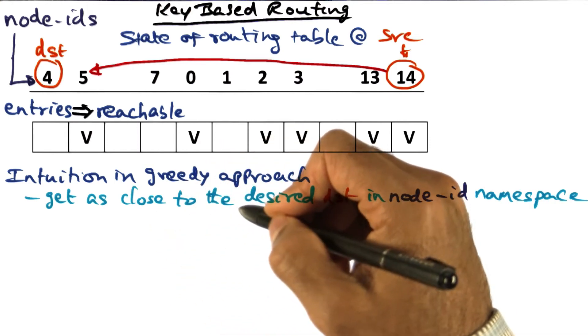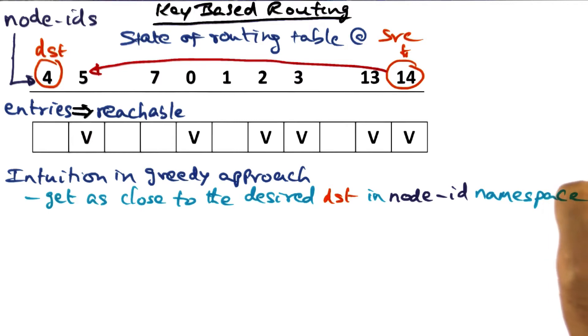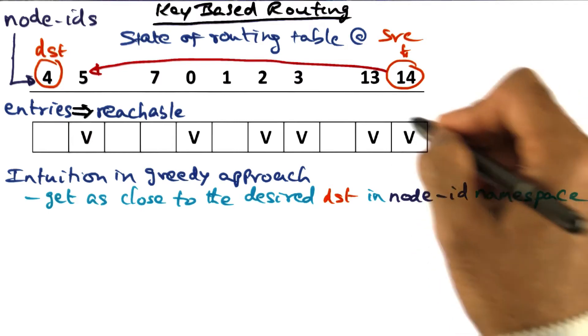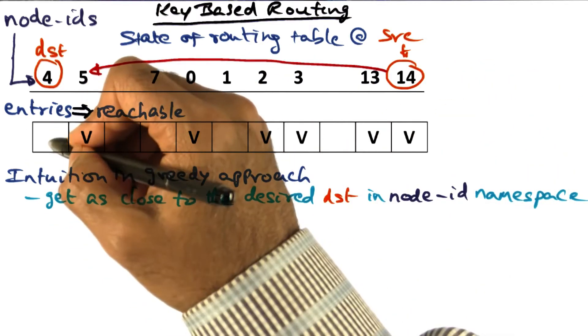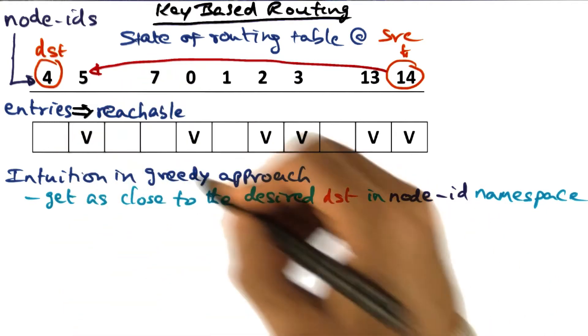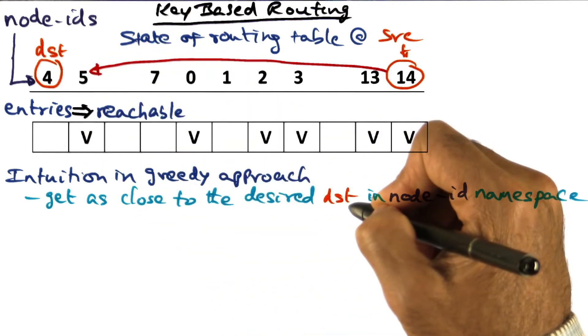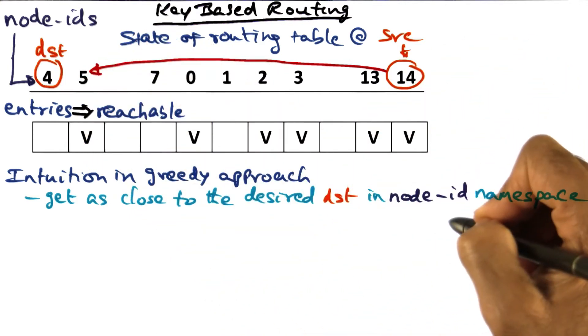But what I'm going to do in the greedy approach is get as close to the desired destination in the node ID namespace. If I look at my routing table, I don't know how to get to 4. But I know how to get to 5, which is close to the desired destination in the node ID namespace.